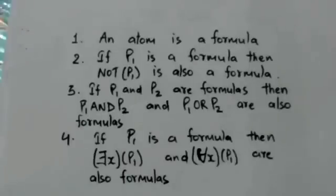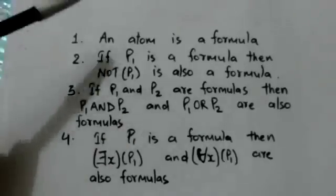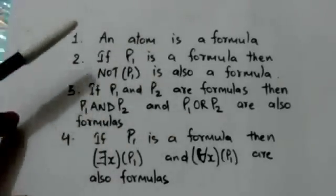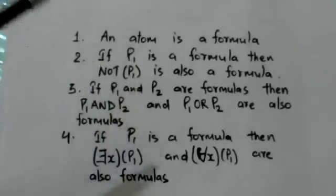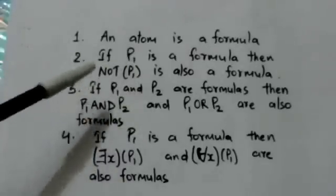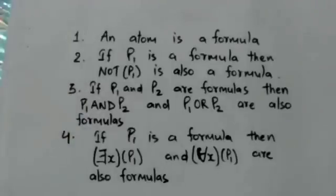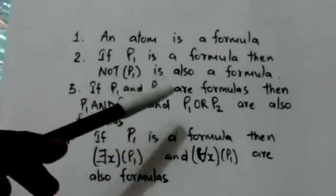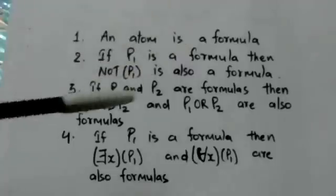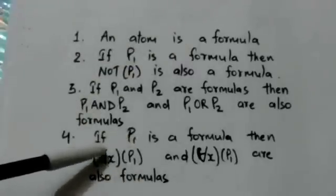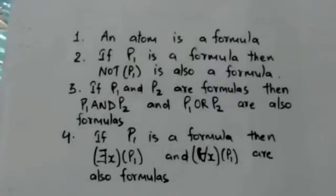A formula is built from atoms by these rules. An atom is a formula. If p1 is a formula, then the expression 'not p1' is also a formula. If p1 and p2 are formulas, then 'p1 and p2' and 'p1 or p2' are also formulas. If p1 is a formula, then the existential and universal quantifier expressions are also formulas, where x is a domain variable.